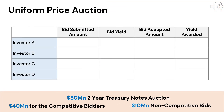Investor A submits a bid of $25 million at a yield of 1.2%. Investor B submits a bid of $10 million at a yield of 1.3%. Investor C submits a bid of $10 million at a yield of 1.4%. And finally, Investor D submits a bid of $15 million at a yield of 1.5%.